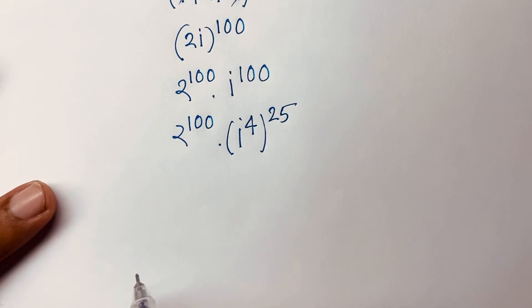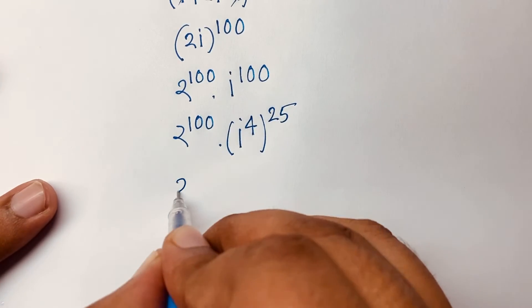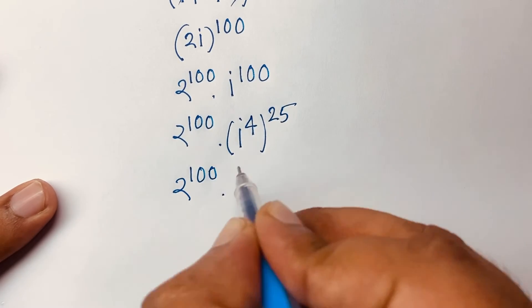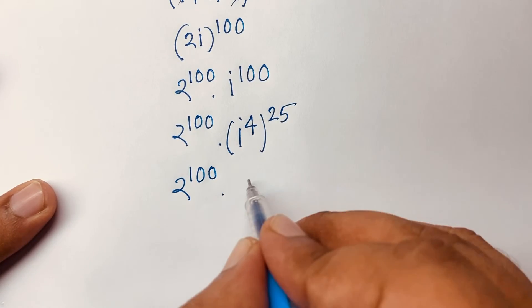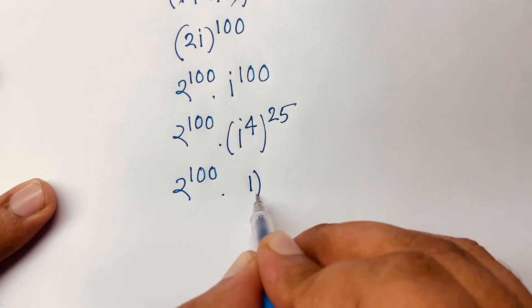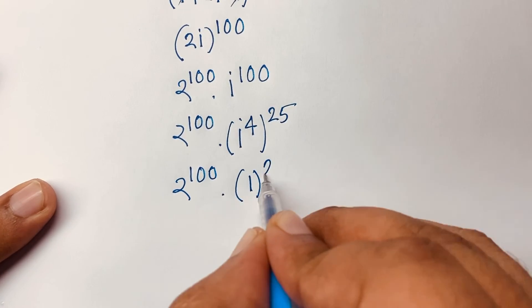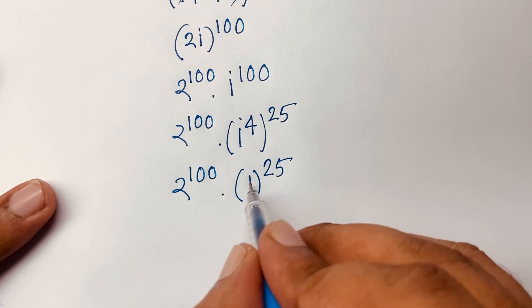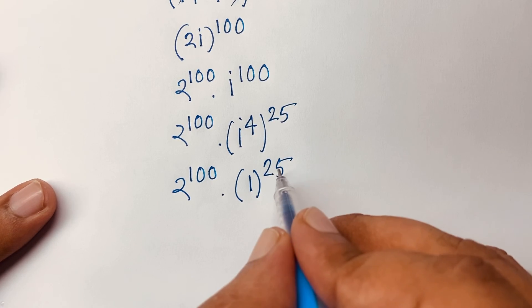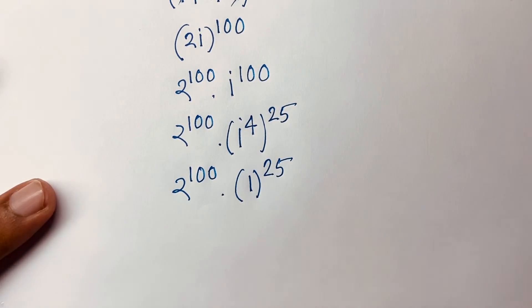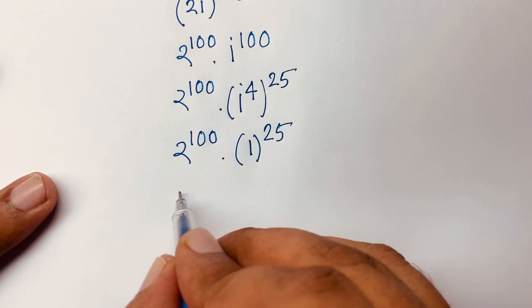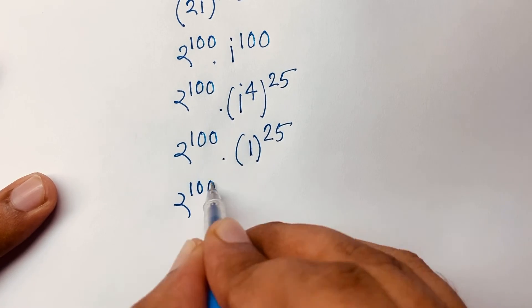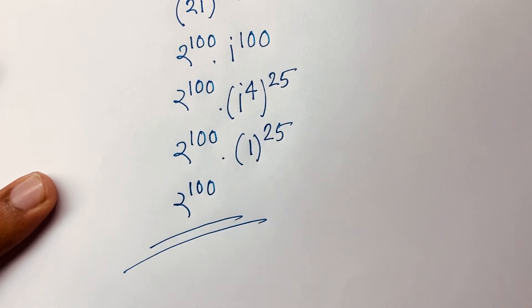Now, i^100 = (i^4)^25, since 4 times 25 equals 100. We know i^4 = 1, so 1^25 = 1. Therefore, the final answer is 2^100.